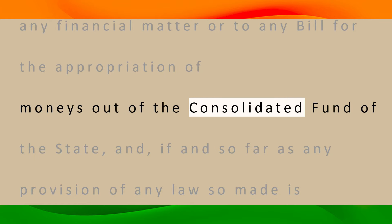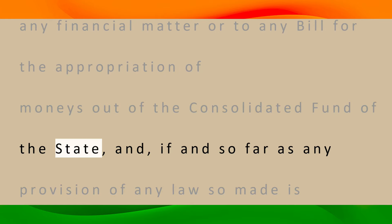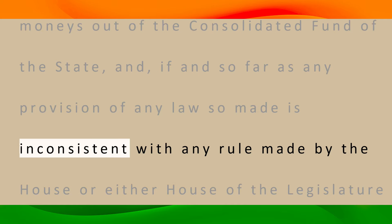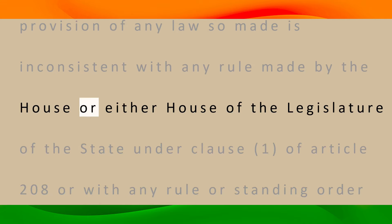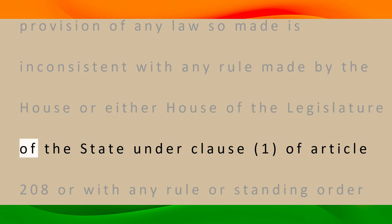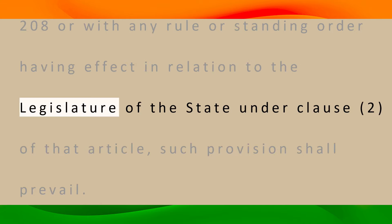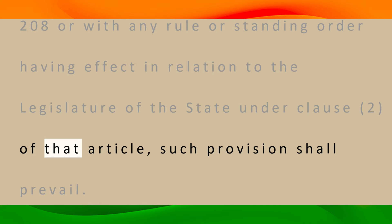And if and so far as any provision of any law so made is inconsistent with any rule made by the house or either house of the legislature of the state under clause (1) of Article 208, or with any rule or standing order having effect in relation to the legislature of the state under clause (2) of that article, such provision shall prevail.